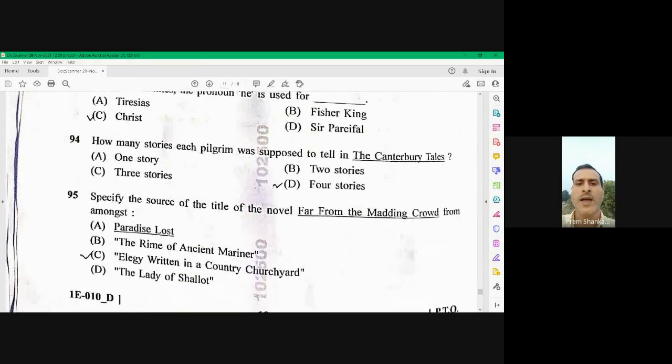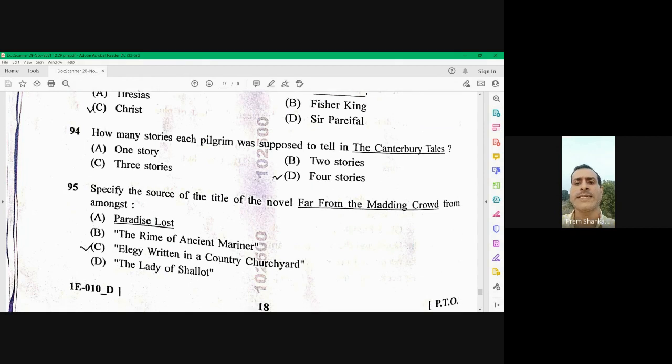Question number 94. How many stories each pilgrim was supposed to tell in the Canterbury Tales? Altogether, four stories were to be told by each pilgrim. Two from going from Tabardine to Canterbury and two from returning back. So four stories is the right answer. 94 is D.